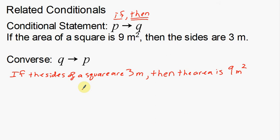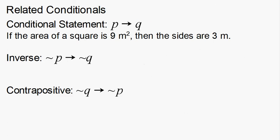So that's the conditional statement — your traditional if-then statement — and also the converse. On the next slide, we have the inverse and the contrapositive. Using the same example: if the area of a square is 9 meters squared, then the sides are 3 meters. Now I'm going to write the inverse.